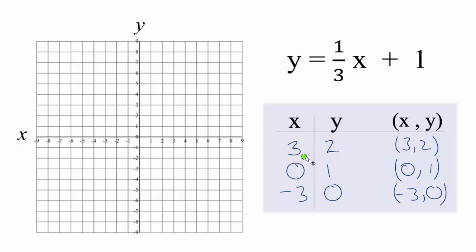Let's see: x is 3, y is 2, so 1, 2, 3, and then up 2 for y. That's our first point. x is 0, y is 1, so go to 0 and then up to 1.